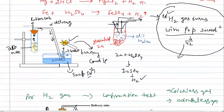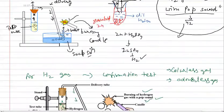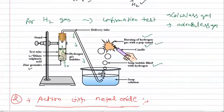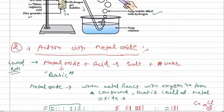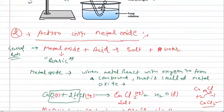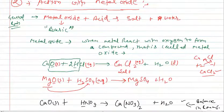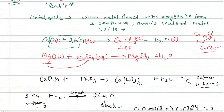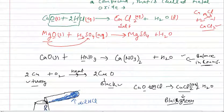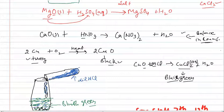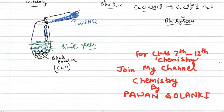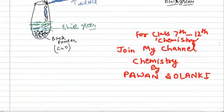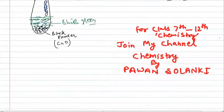The activity demonstration is now the acid with metal oxide. Use green color for the diagram. This is for class 7 to 12 chemistry — join my channel, Chemistry by Phone.